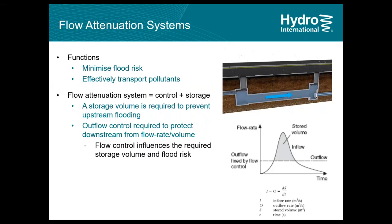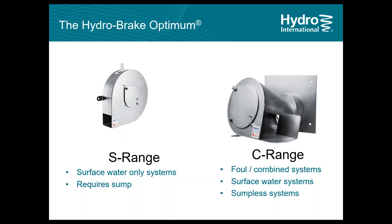That's where the HydroBrake Optimum comes in. The HydroBrake Optimum is a vortex flow control device that can be part of any flow attenuation system. Its function is to minimize flood risk and effectively transport pollutants — this is especially important for combined sewer networks. The HydroBrake Optimum does that by controlling the discharge, and any flow that is not going downstream has to be stored somewhere.